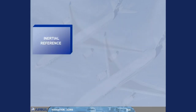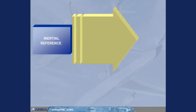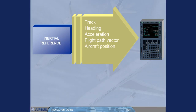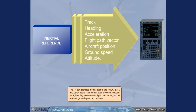The IR part provides inertial data to the FMGC, EFIS, and other users. The inertial data provided includes Track, Heading, Acceleration, Flight Path Vector, Aircraft Position, Ground Speed, and Attitude.